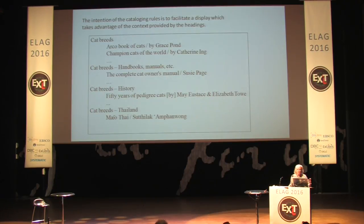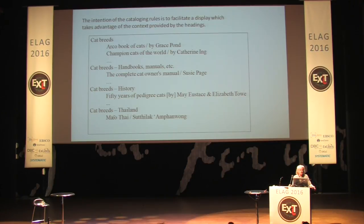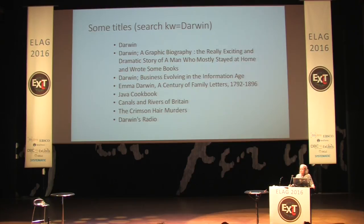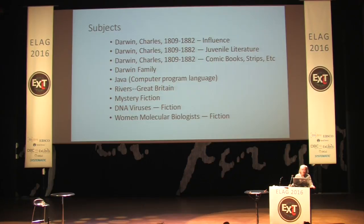What catalogers always asked us for in the 80s — and we didn't figure out how to do it, and I haven't seen any catalog that does it — is that when you have a retrieved set, it replicates the context they had provided through the headings. Today, when you do a keyword search on something like 'Darwin,' the results are all over the map — everything from the person we think of as Darwin, to Java, canals and rivers of Britain, science fiction and mystery. The subjects are just as strange. You can see why users would be confused getting just short bibliographic data. 'DNA virus' is fiction when you've searched on Darwin. How can you explain to somebody how they got there?